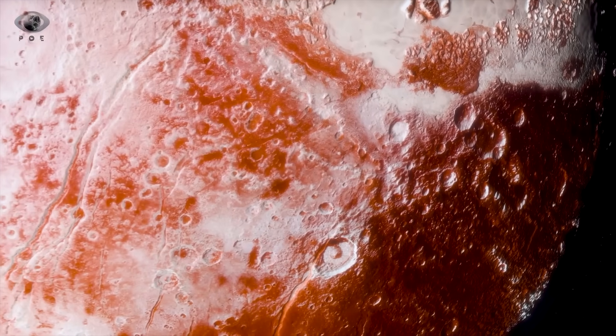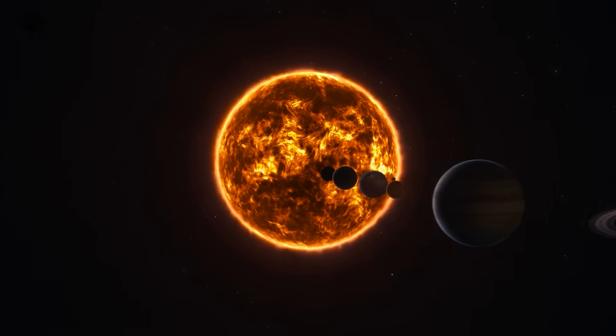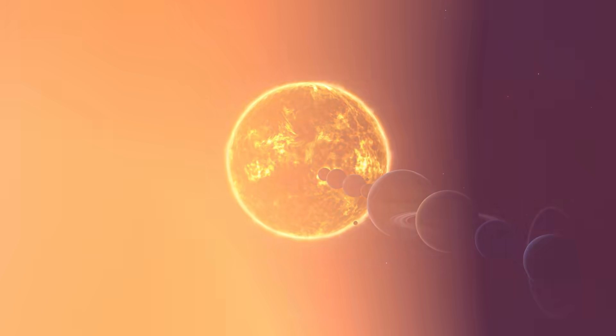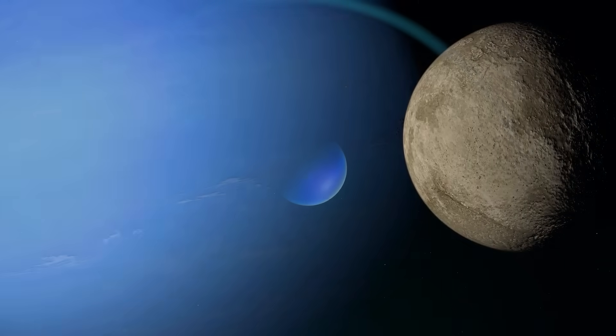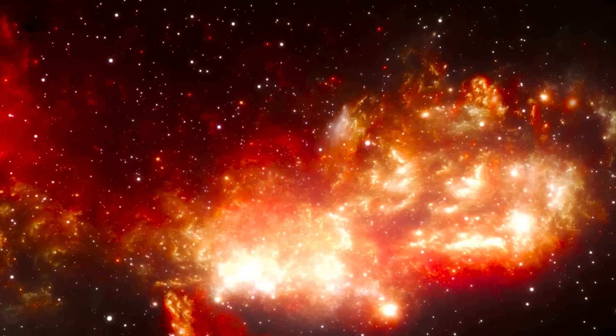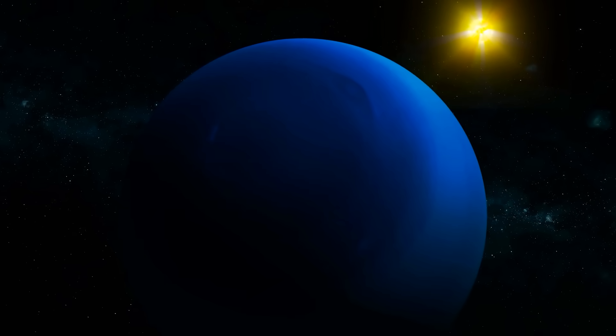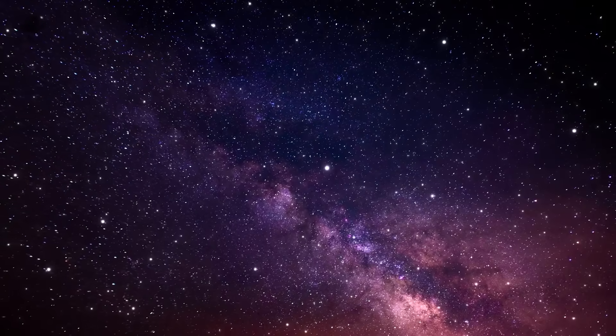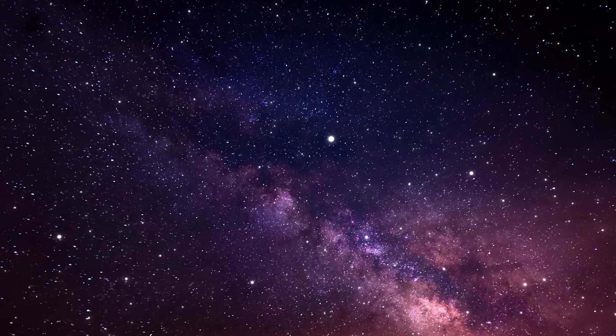With each flyby, it captured breathtaking images, never-before-seen shots that transformed how we view the solar system. It unveiled Saturn's twisted, braided rings and the ghost-like rings around Uranus. It discovered new moons, bizarre magnetic fields, and even pierced through the mysterious plasmoid of Uranus, a feat nobody thought was possible.